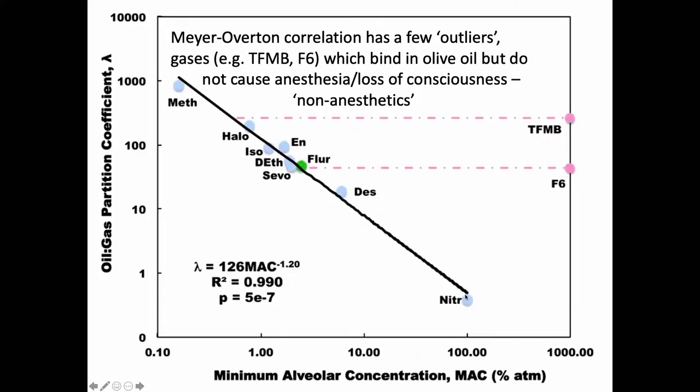There are also a couple of outliers in the Meyer-Overton correlation: two gases, TFMB and F6, which bind in the same place but don't cause anesthesia. A good theory should explain why they do not.